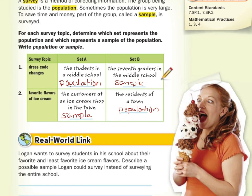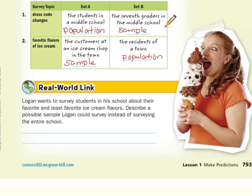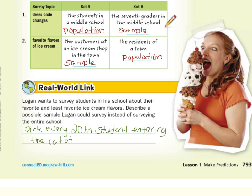As we next look into our real world link: Logan wants to survey students in his school about their favorite and least favorite ice cream flavors. Describe a possible sample Logan could survey instead of surveying the entire school. What if you pick random students in the cafeteria? What if you pick every 20th student entering the cafeteria to survey? That way you're not asking the entire school — you're just asking about one-twentieth of it.